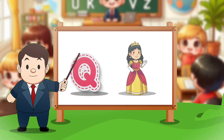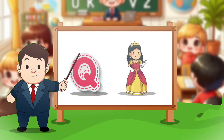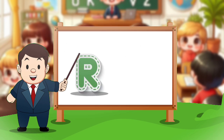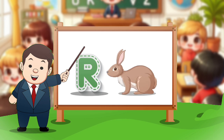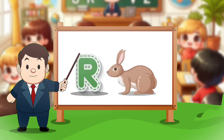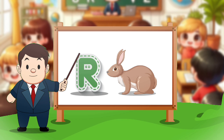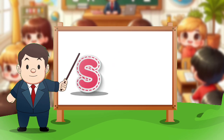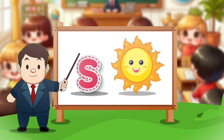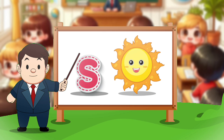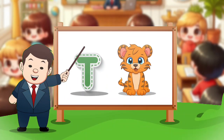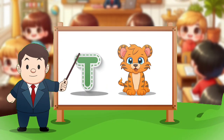Q. Q for queen. R. R for rabbit. S. S for sun. T. T for tiger.